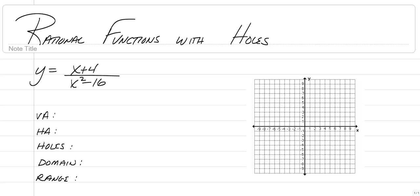Graphing them is pretty much the exact same thing that we did in the last video. You still have to figure out what makes the denominator zero for your vertical asymptote. You still need to determine if there are more x's in the numerator or denominator, or the same in both. You still need to type the function into your graphing calculator to sketch it out. There's only one new addition: you have to place the hole.